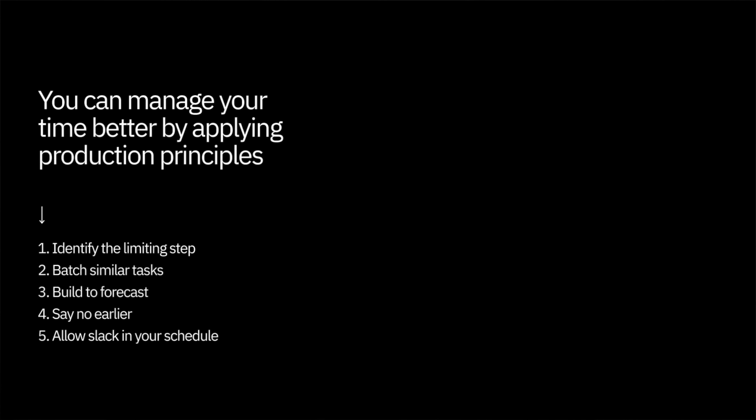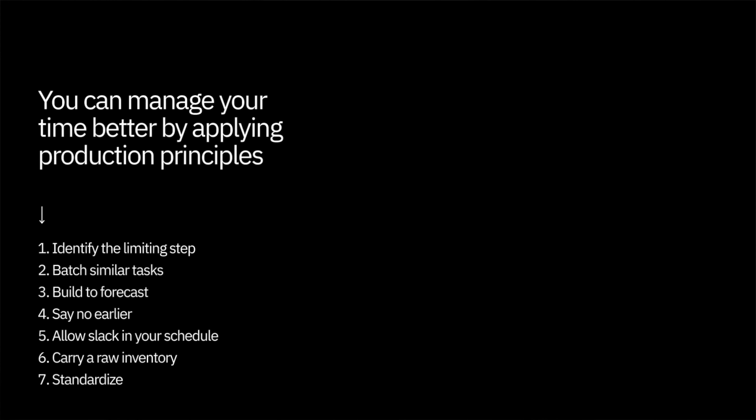Three: build to forecast — the majority of your work should be by forecast, and the medium is your calendar. Most people treat calendars as a place for orders to come in; you should use it as a production planning tool. Schedule work that is not time critical between the limiting steps of your day, and just as a factory manager says no to additional jobs if the factory is at capacity, you should say no to tasks that would overload your system. Four: say no earlier — stop work before things reach a higher value stage. Five: allow slack in your schedule — one interruption shouldn't kill your entire day. Six: carry a raw inventory in the form of projects that don't need to be finished now, but would increase your team's productivity over the long term — this also prevents you from meddling in your subordinate's work. Seven: standardize while continuing to think critically about what you do and the approaches you use.